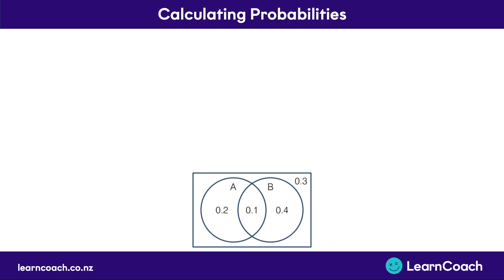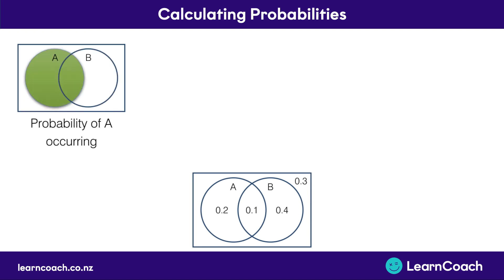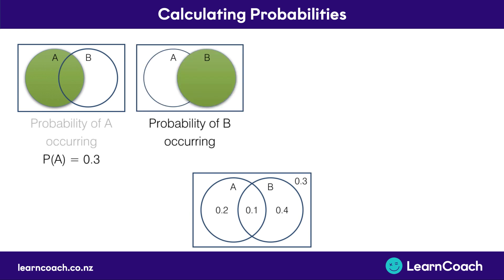If we look at this in a visual way, we can use Venn diagrams. This shows the probability of A occurring, which is all of the numbers in the green A circle — so 0.2 plus 0.1, which equals 0.3. Now if we look at the probability of B occurring, it's the same deal: we add 0.1 and 0.4 to give us a probability of 0.5.